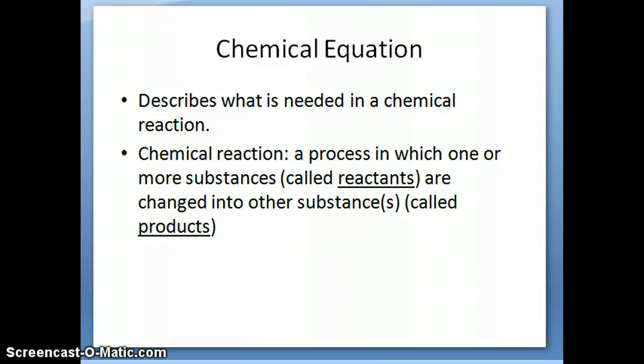So first off, we'll just discuss what a chemical equation is. A chemical equation is basically a type of equation that describes what you need to have a chemical reaction happen. And a chemical reaction, as you know, is a process in which one or more substances, which we're going to call reactants, are changed into other substances, which we're going to call products.